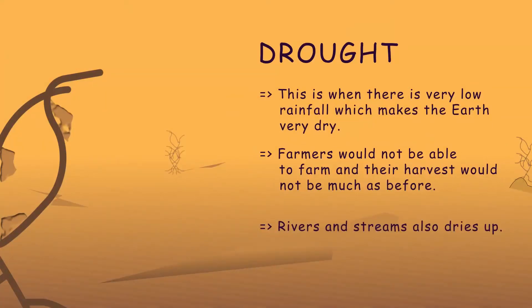Drought. This is when there is very low rainfall, which makes the earth very dry. During drought seasons the land would be very dry. Farmers will not be able to farm and their harvest will not be as much as before. Rivers and streams also dry up.